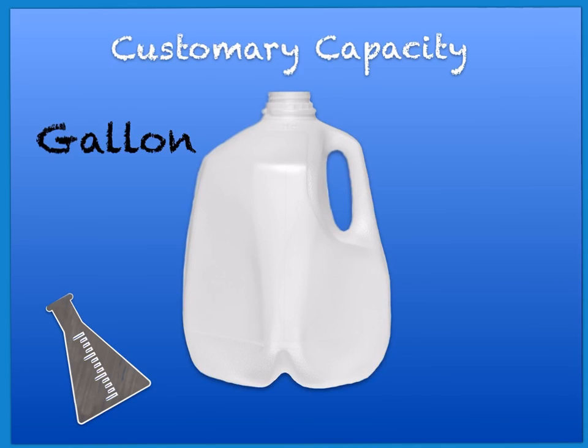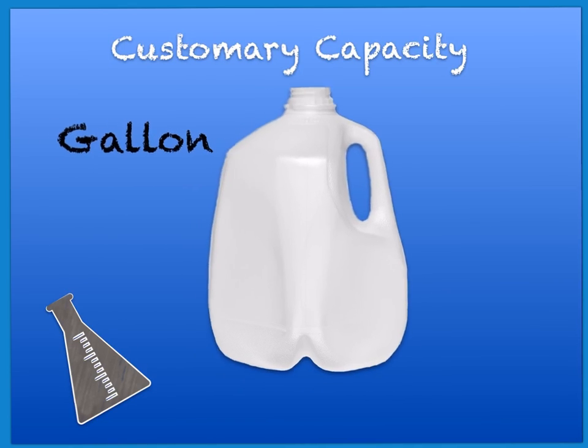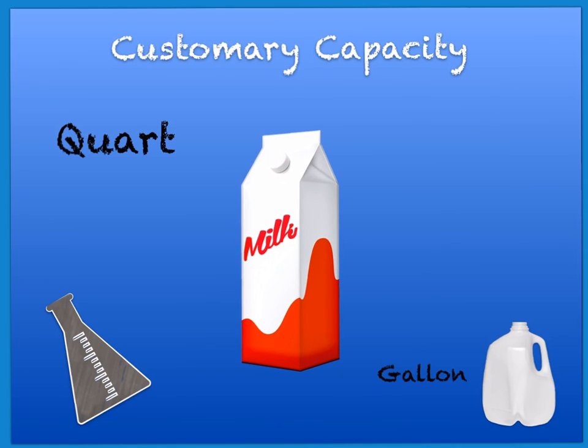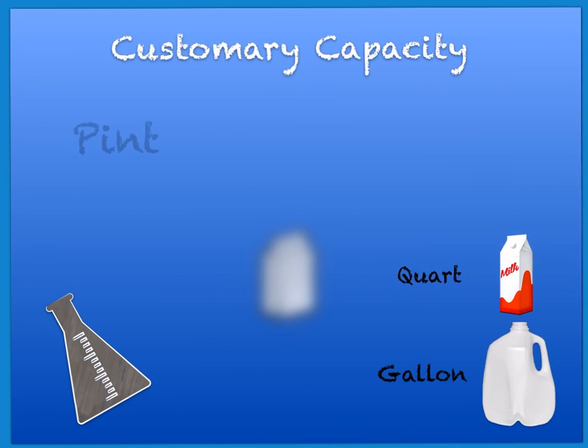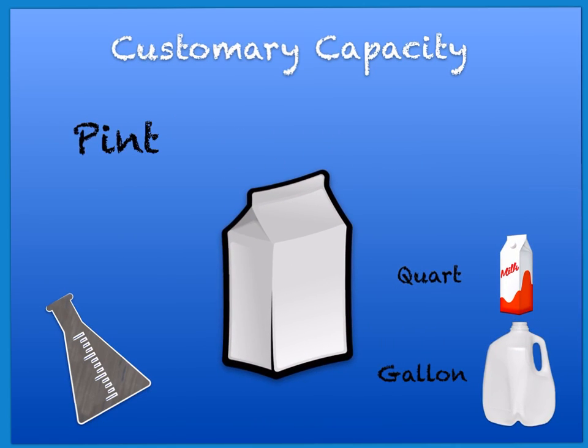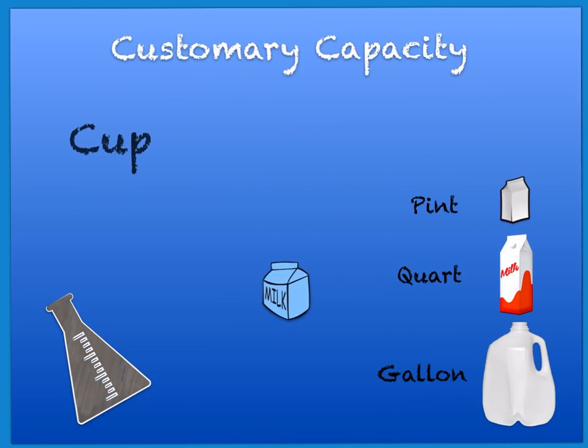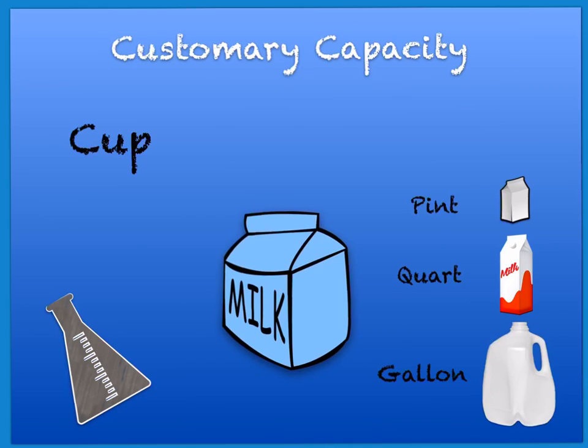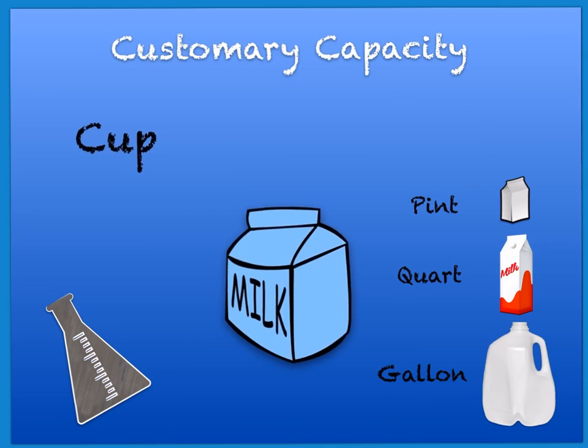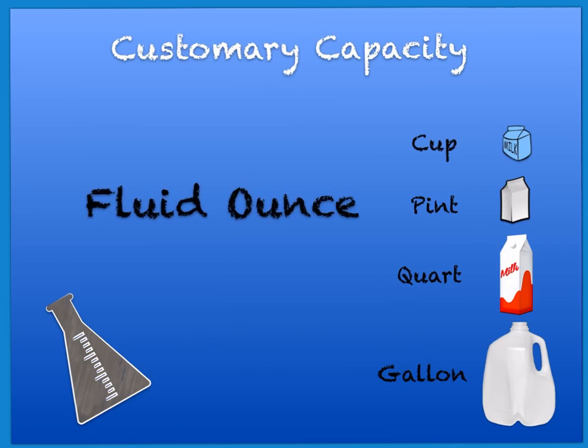The largest unit is the gallon. Milk is frequently in these large containers. It is followed by the quart. Some schools sell milk in pint-sized cartons, while others sell drinks in cup-sized cartons. The smallest size we will be talking about is the ounce. So we don't confuse this with the ounces used to measure weight, we refer to ounces measuring volume as fluid ounces, and they are very small.